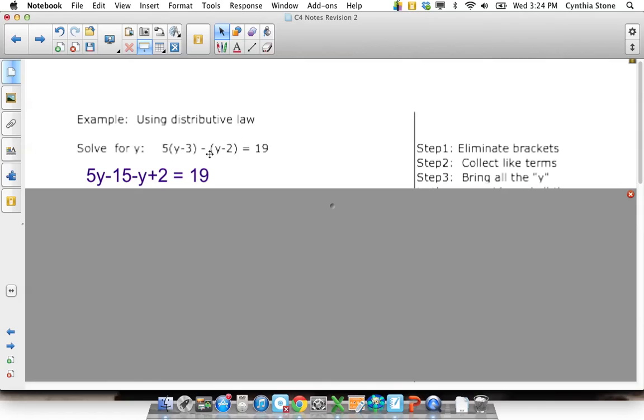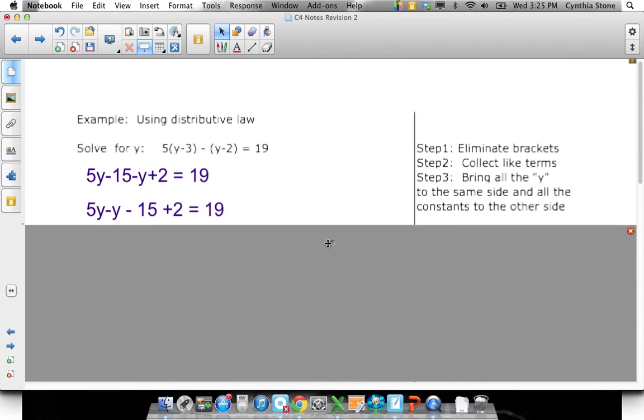To get rid of this bracket, I had to change the sign of everything in the middle. We've done that before, so that becomes minus y and plus 2. The y becomes negative and the 2 becomes positive when I get rid of the brackets. Nothing changes over here. So I've eliminated my brackets. Now I'm going to collect the terms, bringing everything together.